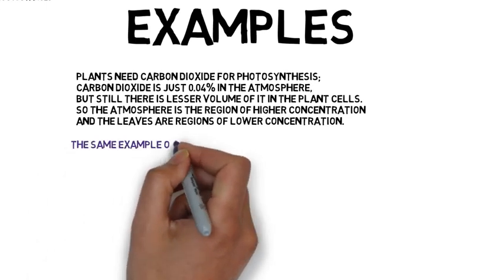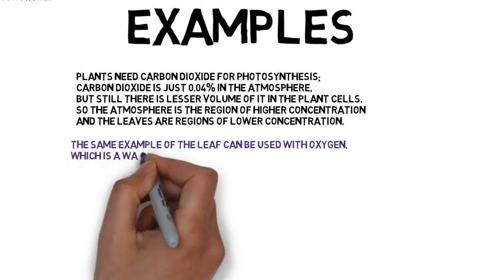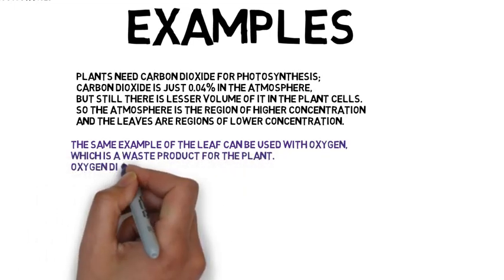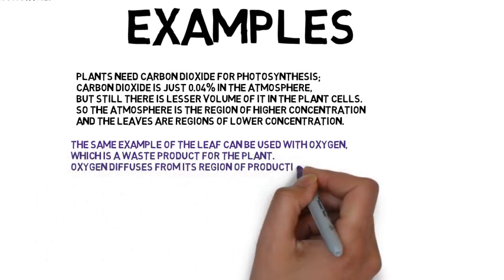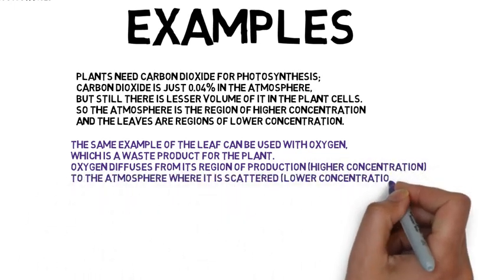The same example of the leaf can be used with oxygen which is a waste product for the plant. Oxygen diffuses from its region of production, higher concentration, to the atmosphere where it is scattered, lower concentration.